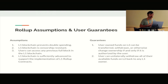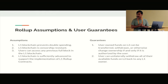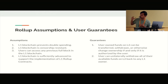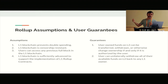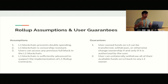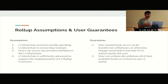With those sets of assumptions, we arrive at two guarantees. The first guarantee is that when a user has funds on the L2 — on this off-chain execution environment — those funds can be transferred, withdrawn back, or otherwise change ownership if and only if the user authorizes that to happen. It can't be done by any third party. The second guarantee is that the user can unilaterally withdraw all of their available funds from L2 back to their L1 account.